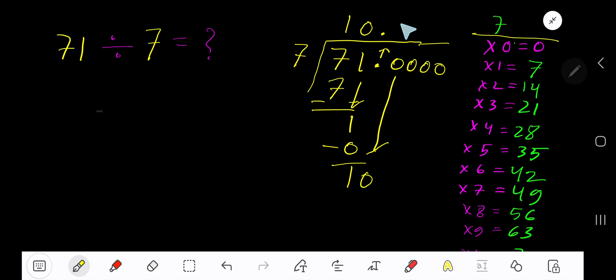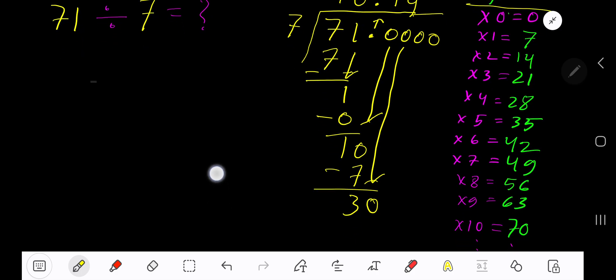2 times 7 is 14, which is too big, so one time. 1 times 7 is 7. Subtract to get 3. Bring down another 0. 7 goes into 30 how many times? 5 times 7 is 35, which is too big, so four times. 4 times 7 is 28. Subtract to get 2.